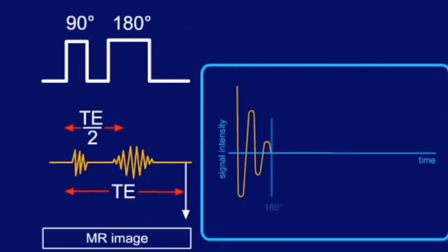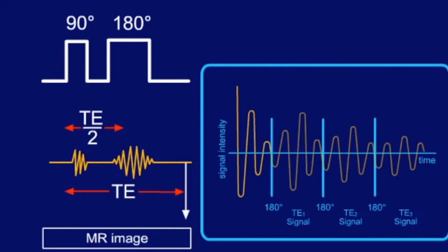As we have heard, we can produce not only one, but several echoes. The disadvantage is, however, that the signal becomes weaker and weaker.